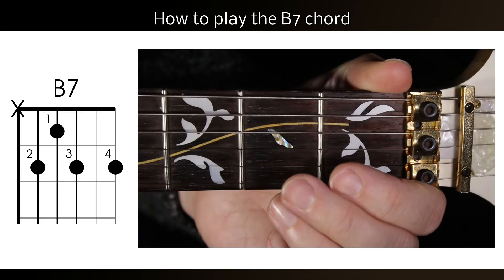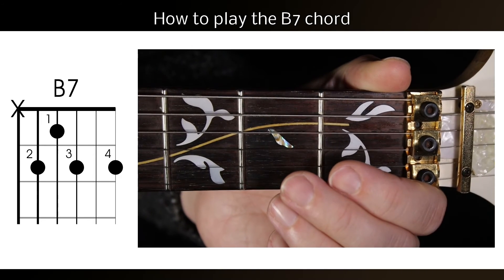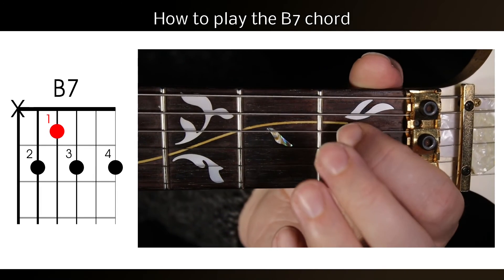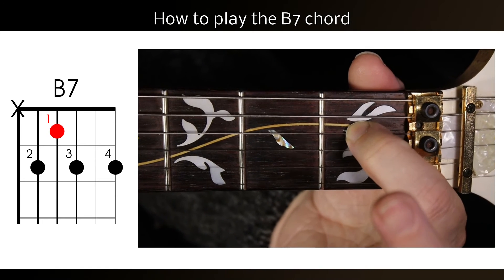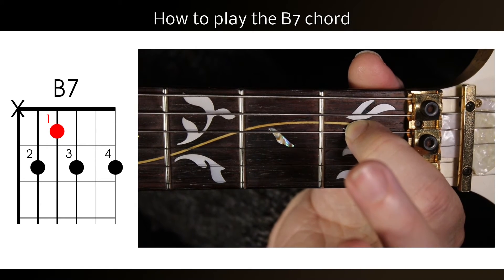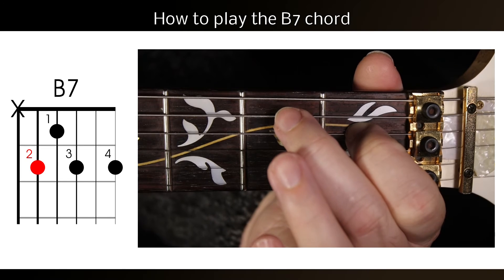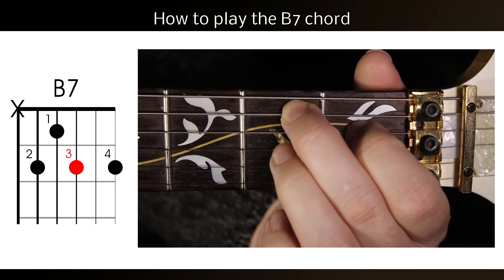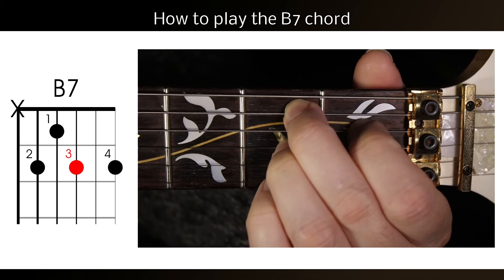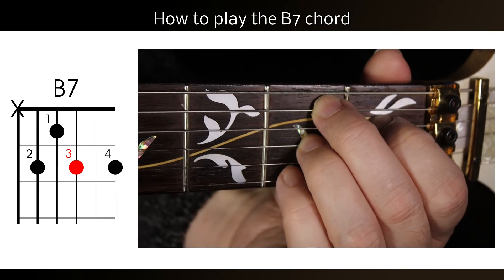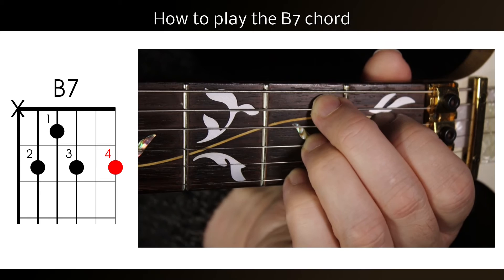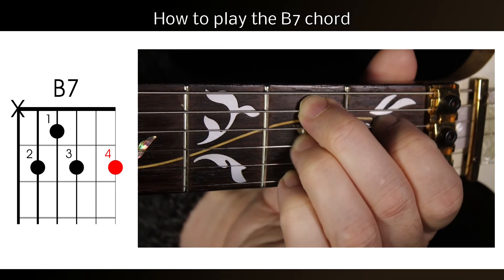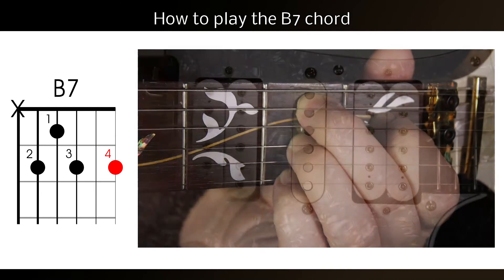Now, we need to re-finger the chord shape. Place the first finger in the first fret of the D string. Then place the second finger in the second fret of the A string. Place the third finger in the second fret of the G string. And finally, place the fourth finger in the second fret of the top E string. And now strum.